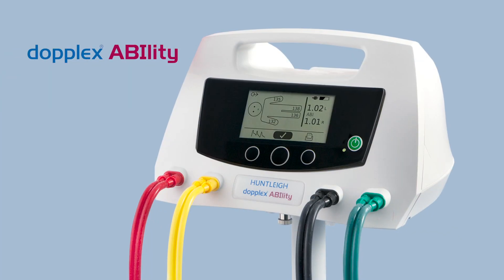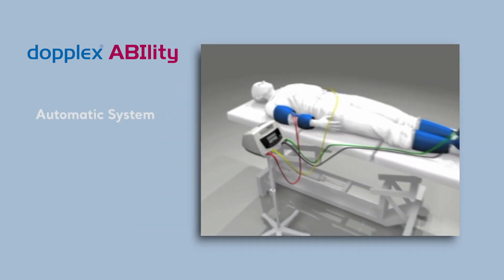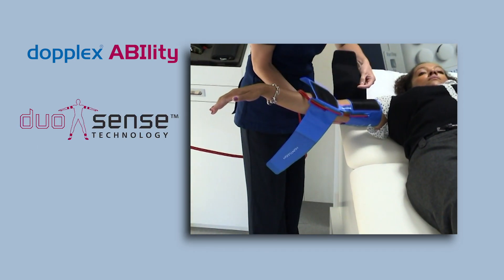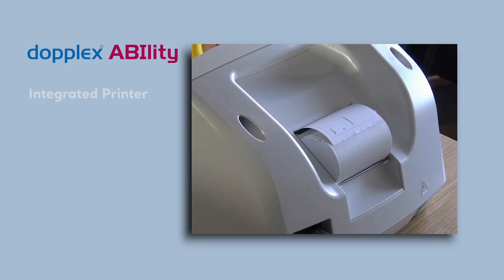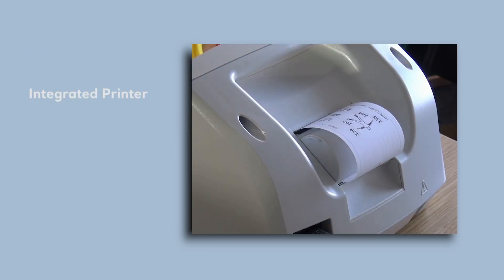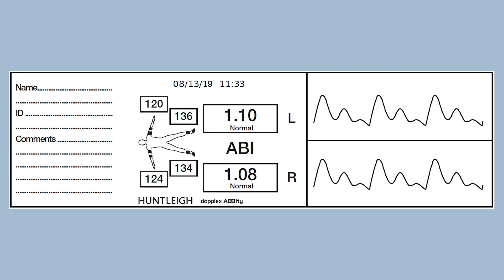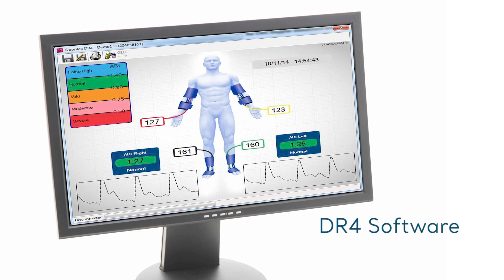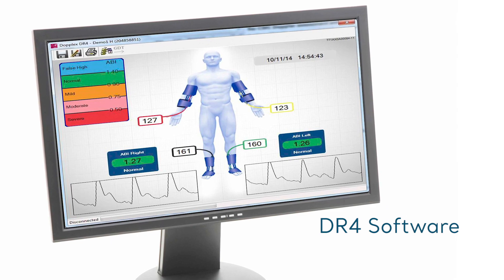The Dahl Flexibility is an automatic ankle brachial screening system that provides easy, fast, and accurate ABI measurements in only three minutes. Simply attach the four patented Duosense cups and push the start button. The system includes an integrated printer to provide an immediate printout of the results, including waveforms. The results can be transferred to a computer using the DR4 software and exported as a PDF for inclusion in EMR systems.